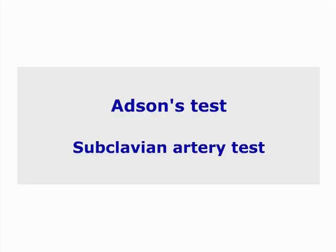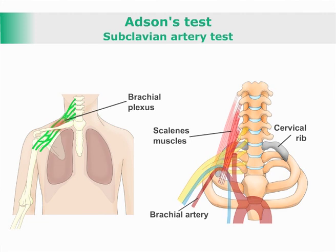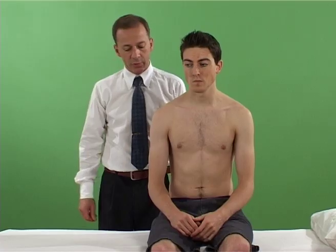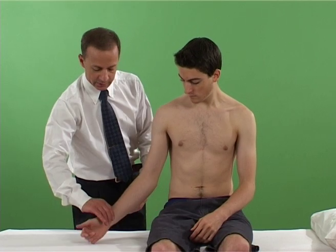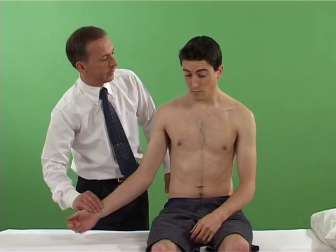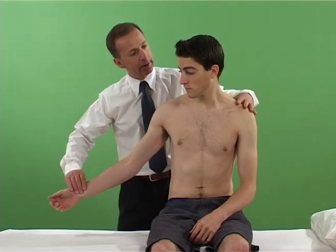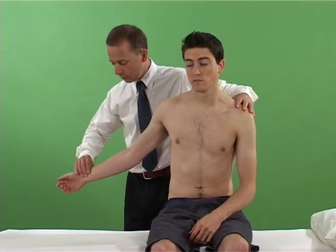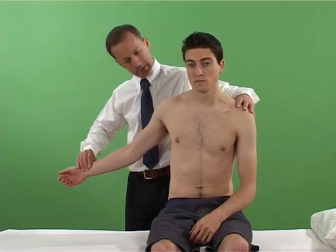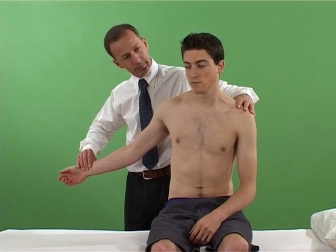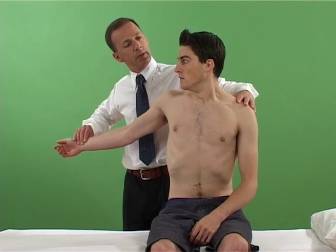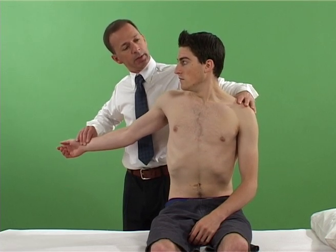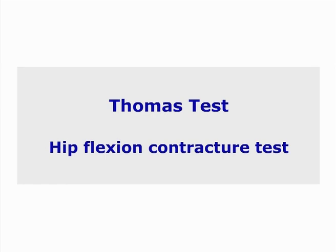Adson's test — subclavian artery test. Test for the presence of thoracic outlet syndrome. With the patient sitting, the examiner palpates the patient's radial pulse while abducting and extending the patient's arm.